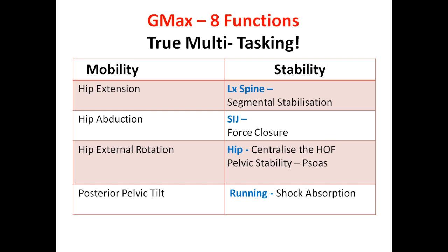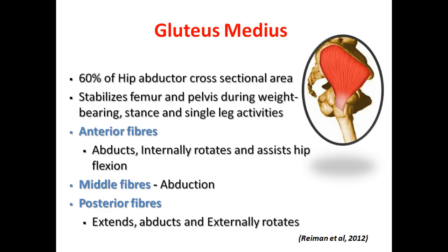Along with the quads, the glute max is important for shock absorption. The glute med has an important stability role, especially in weight-bearing positions which involve single leg activity. The most important fibers are the posterior fibers, which are mainly involved in extension, abduction and external rotation.